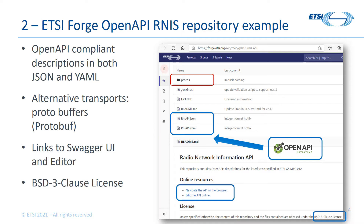Looking in the repository, the various description files can be seen. These are provided in both YAML and JSON, where I'd consider the YAML more human-readable and more compact. In fact, the JSON is actually generated from the YAML. In the case of RNIS, a proto file is also provided as an example of an alternative transport, where JSON serialization over HTTP is the default.